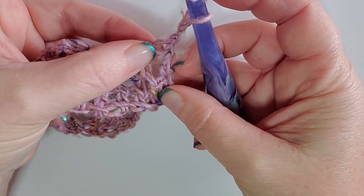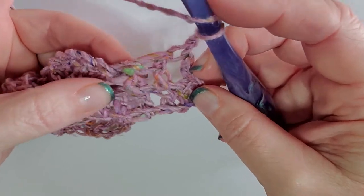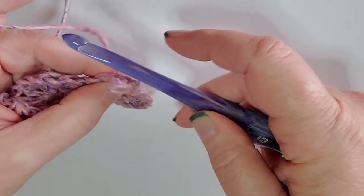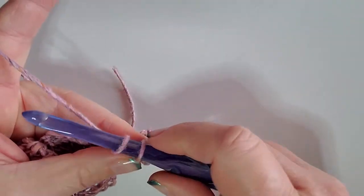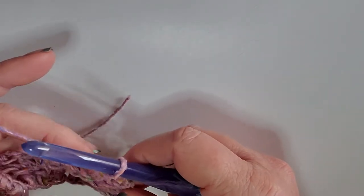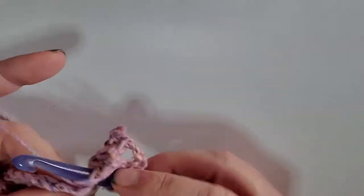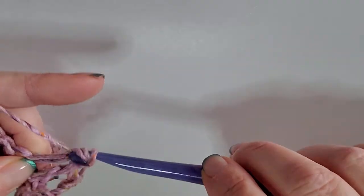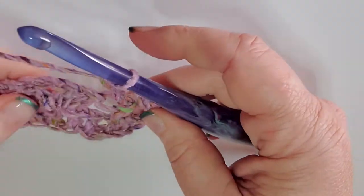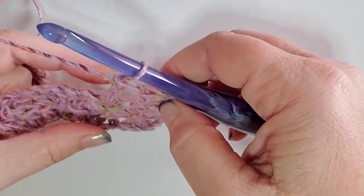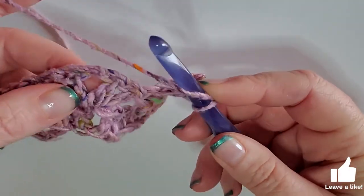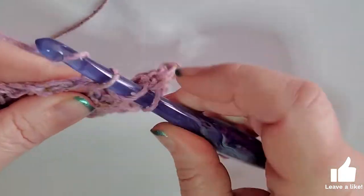We're going to skip this first stitch because our chain three right here counts as a stitch. Going into that next stitch right there, we're going to do a double crochet. There we have our three doubles, and then we're going to go right into the center of our shell and put another shell.